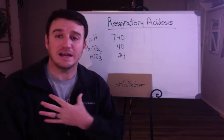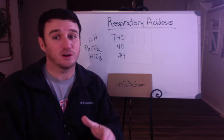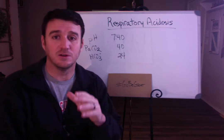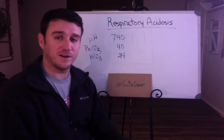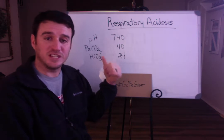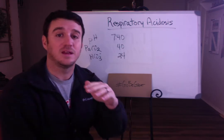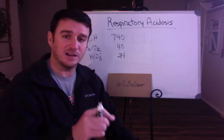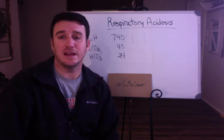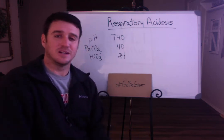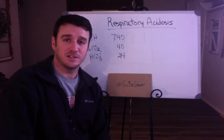Normal pH is 7.35 to 7.45 — you need to know that. I'm going to work from 7.40, but we know the range is 7.35 to 7.45. Arterial partial pressure of CO2 has an absolute normal of 40, a normal range of 35 to 45, and bicarb has an absolute normal of 24 with a range of 22 to 26.